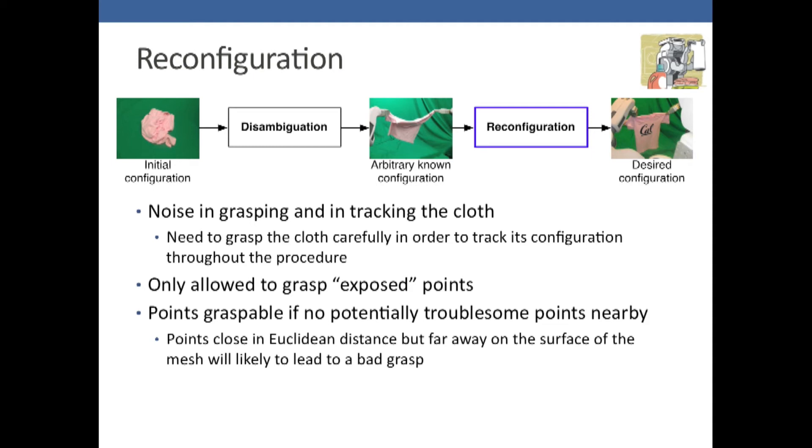More formally, these points are graspable if there's no potentially troublesome points nearby. If there's points that are folded over onto the cloth, close in Euclidean distance but far away on the surface of the cloth, that will lead to a bad grasp because you'd be grabbing the sleeve and the body of the shirt. That's not desirable because we don't model that. It usually takes one or two re-grasps to reach the desired configuration.